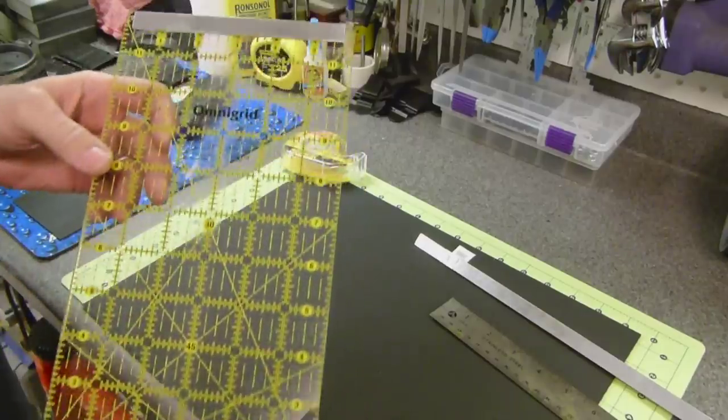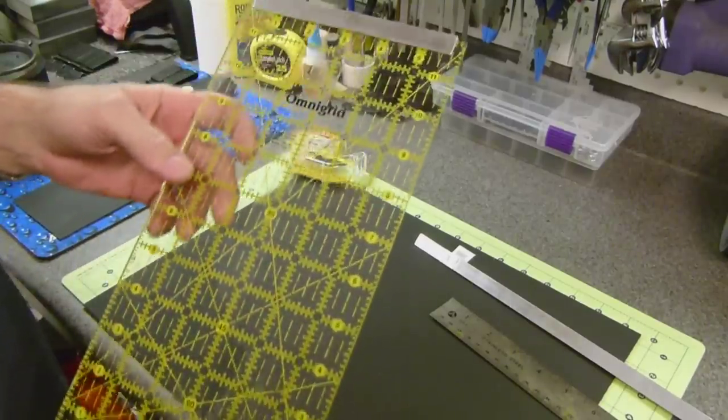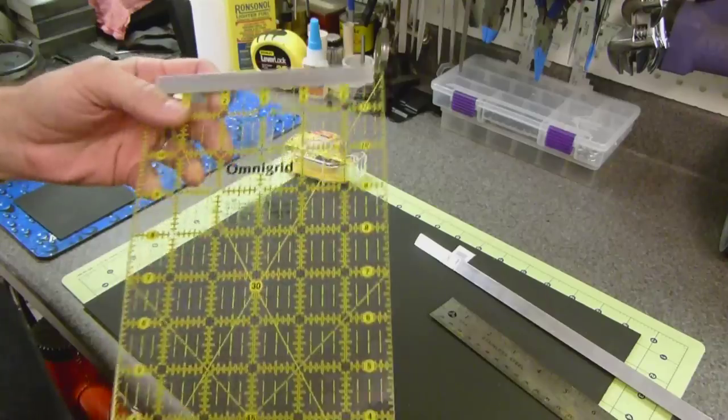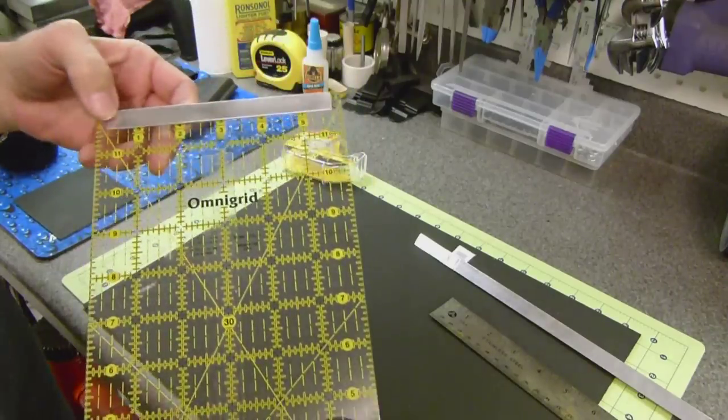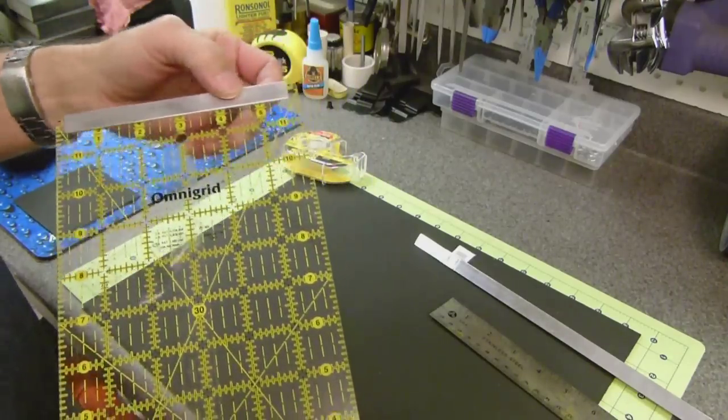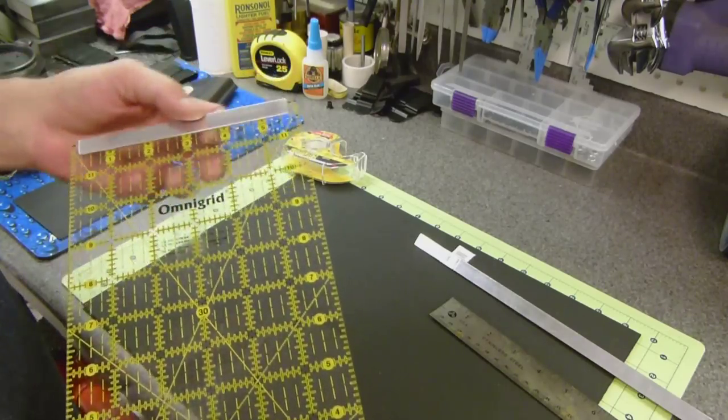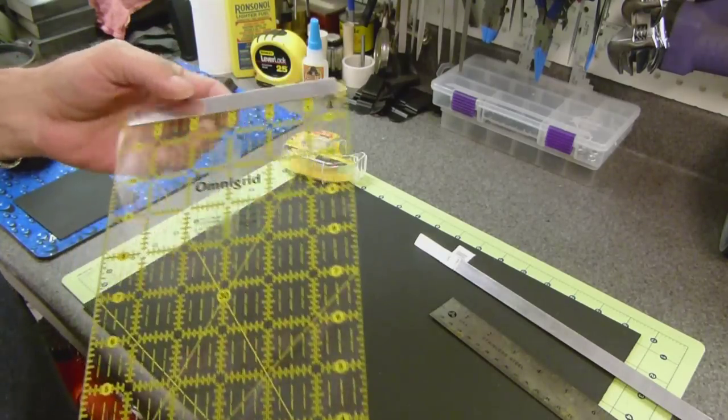It's an omni-grid quilters rule that I've hacked to add a piece of aluminum edging on so that it can work as a square. And it's worked out relatively well so far.